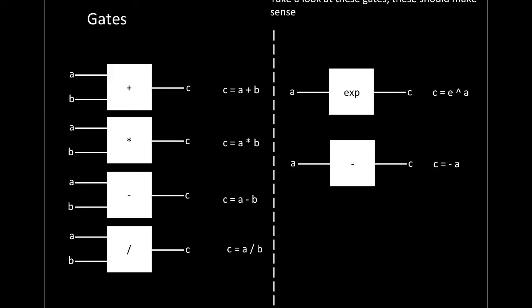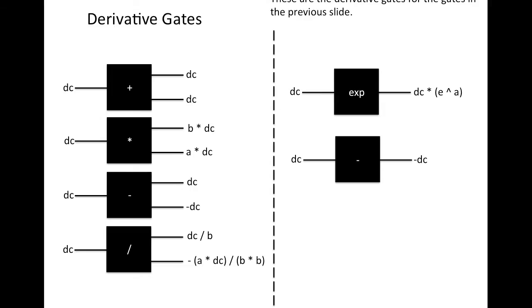Now let's look at what we call backpropagation for a gate — it's the partial derivative with respect to the inputs of the gate. If you don't understand partial derivatives, there's a great Khan Academy tutorial linked in the description below. These are the derivative gates — don't freak out if you don't understand what's going on, we'll walk through an example.